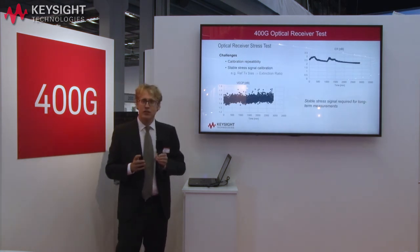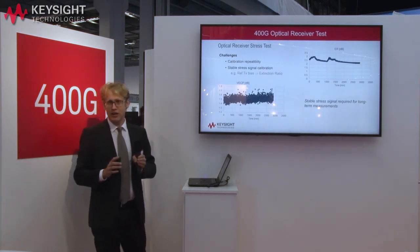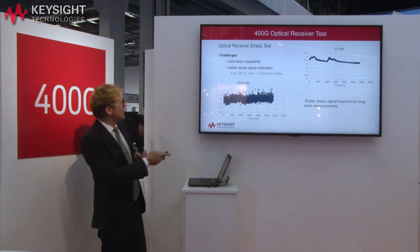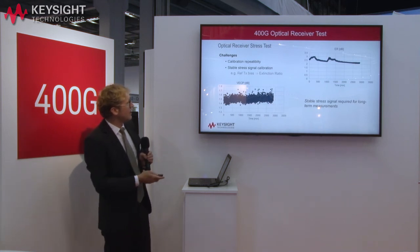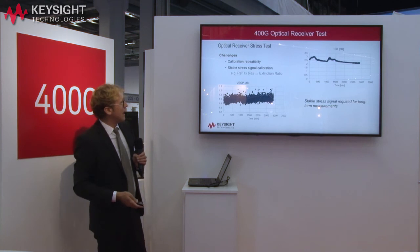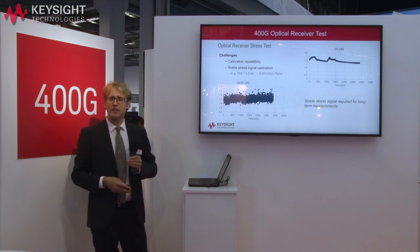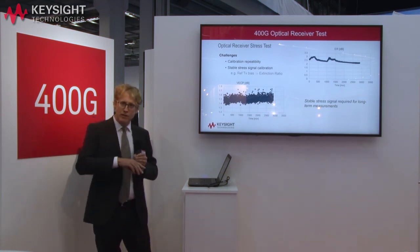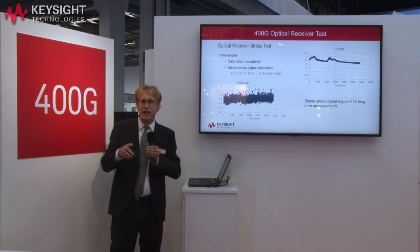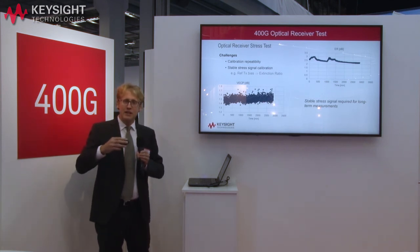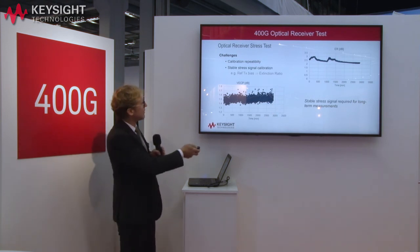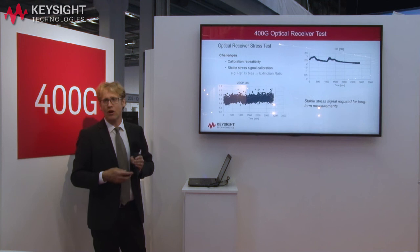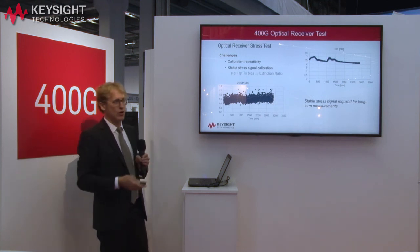Another challenge is achieving a very stable calibration for the optical stress signal. For instance, measurements of a stress optical signal over a long time show that with a standard reference transmitter using non-optimized biasing control — typically a Mach-Zehnder modulator-based transmitter — you really need a carefully controlled biasing circuit to obtain a stable extinction ratio or TDQ over time to ensure long-term measurement reliability.